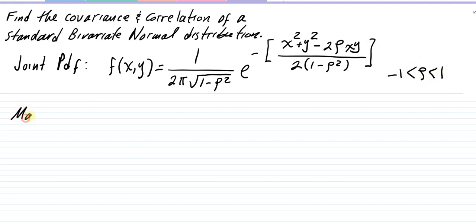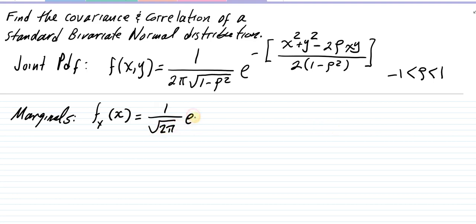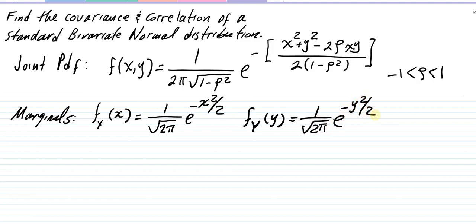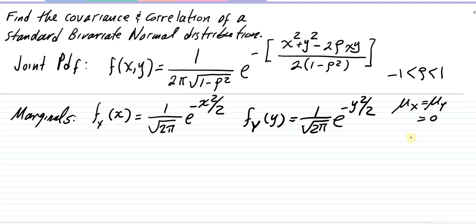Looking at the marginal distributions of X and Y: the marginal of X is the familiar one over square root of two pi times e to the negative x squared over two. The marginal of Y is likewise one over square root of two pi times e to the negative y squared over two. Remember, for the standard distribution, μ_x and μ_y both equal zero, and the standard deviation is one, so the variance is one as well.